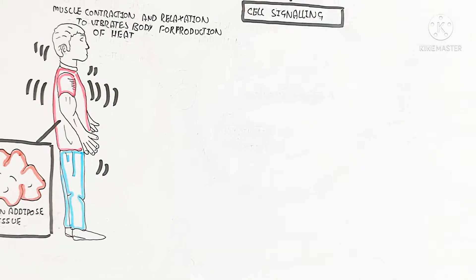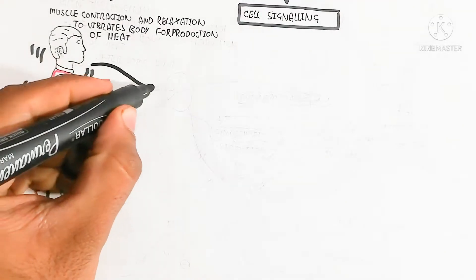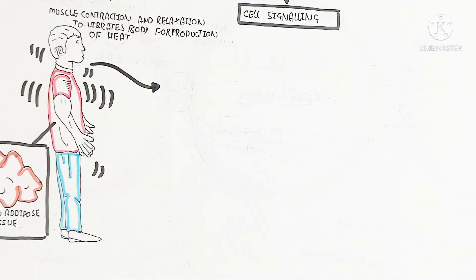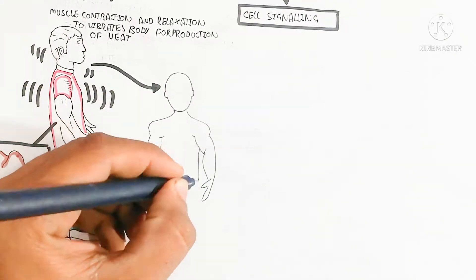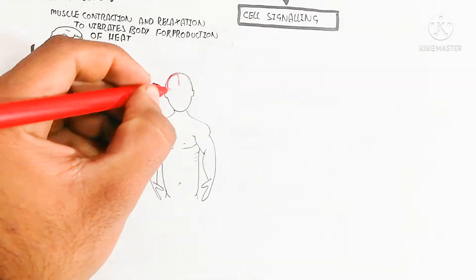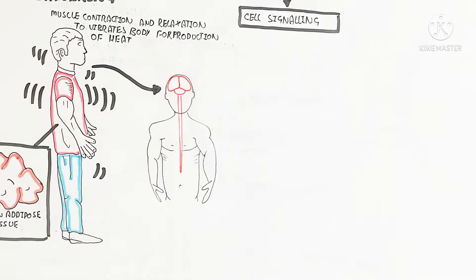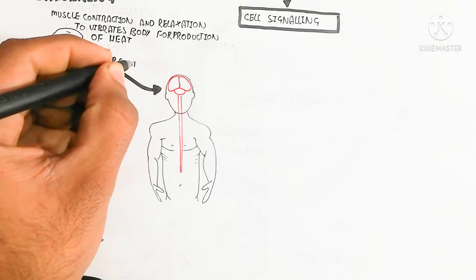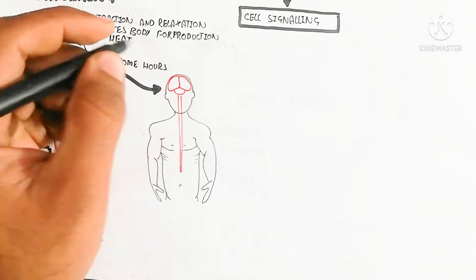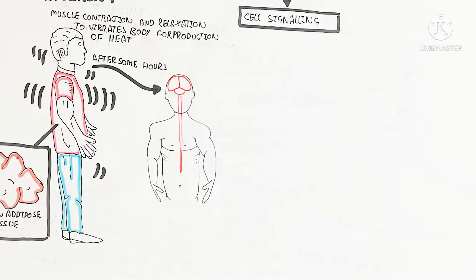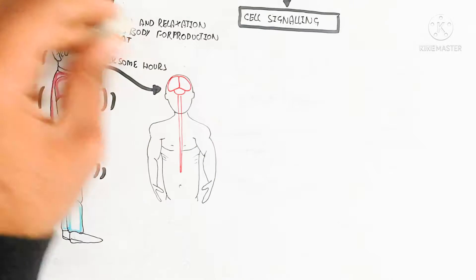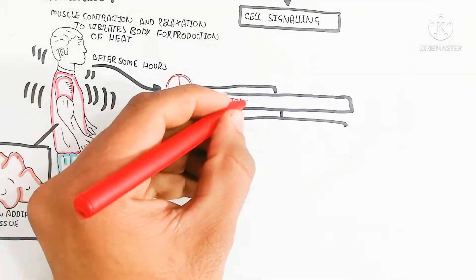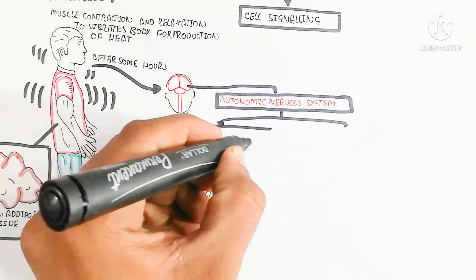The autonomic nervous system plays a key role here. It contains the sympathetic and parasympathetic nervous systems. The parasympathetic nervous system governs the rest-and-digest response, while the sympathetic nervous system activates the fight-or-flight response.